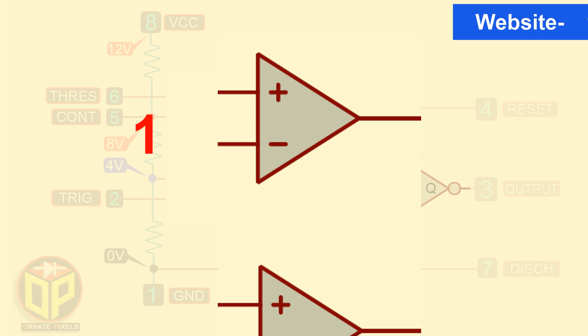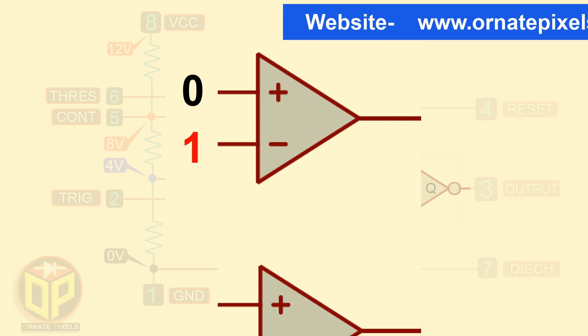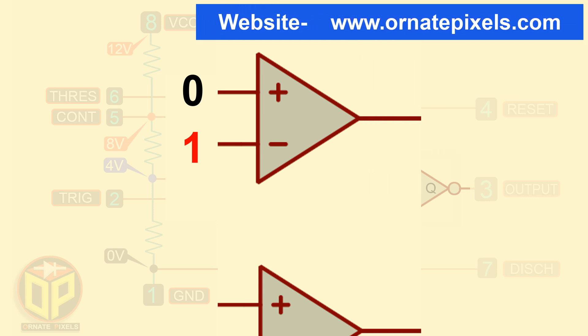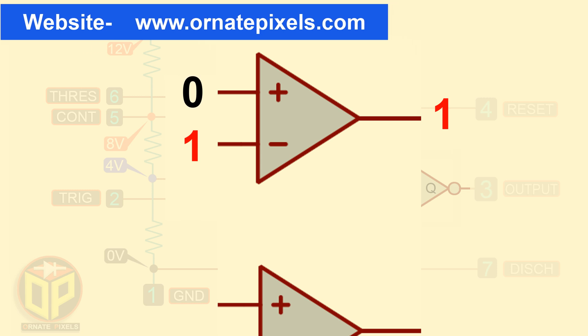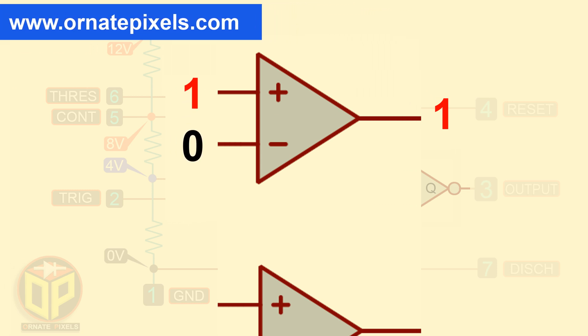When a high voltage is applied to its inverting terminal and a low voltage to the non-inverting terminal, the comparator outputs a high voltage. Then, when the opposite voltage is present at the input terminals, the comparator will produce a low voltage output.